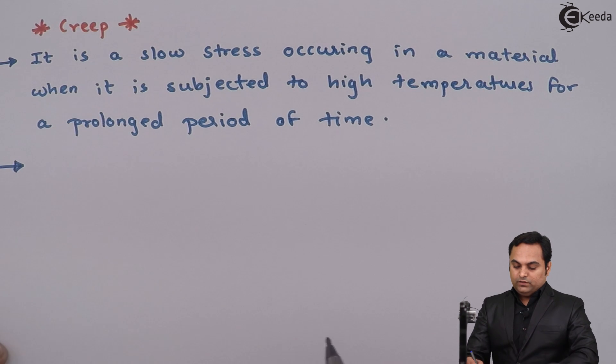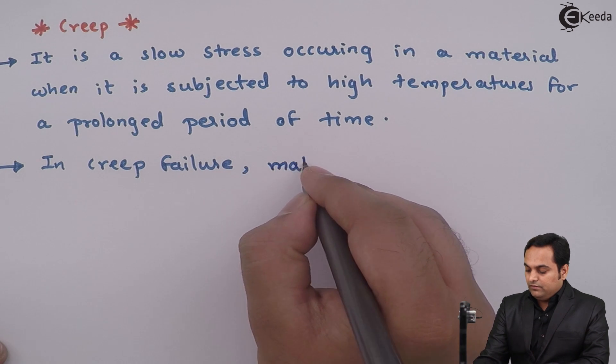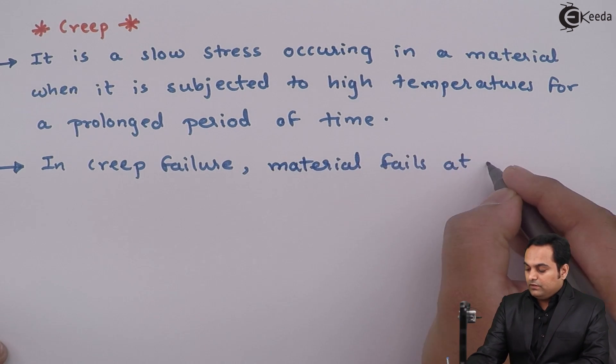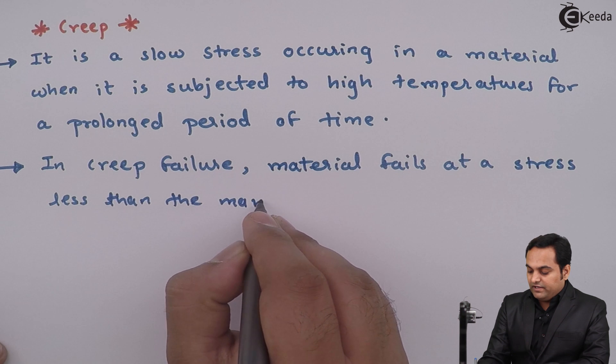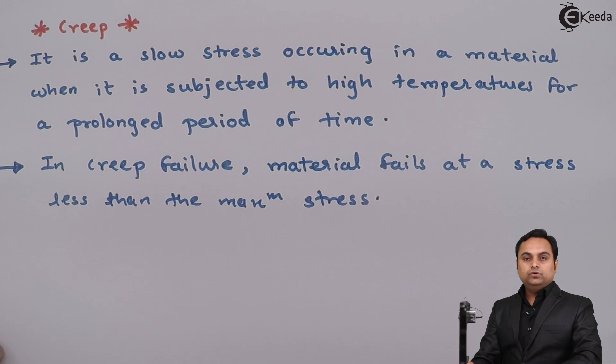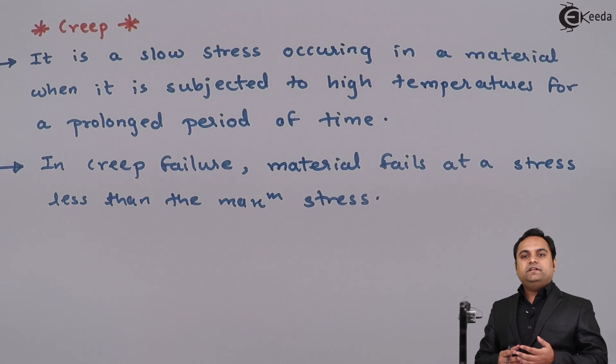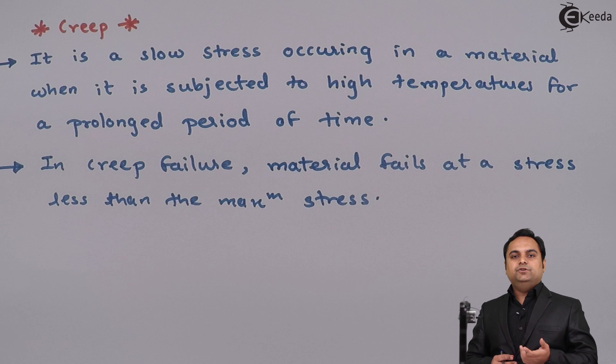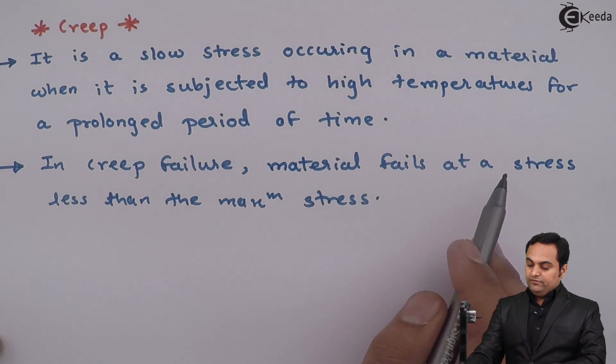Next, in creep failure, material fails at a stress less than the maximum stress. When we are considering creep, that is a material which is subjected to high temperatures, then because of that high temperatures over a long period of time, stresses are induced or stored inside the material. And when we are applying a load value which is less than the maximum load, then the material fails. So it will fail at a stress value which is less than the maximum stress.